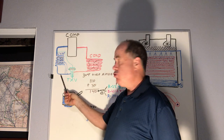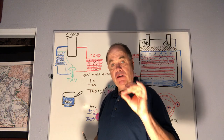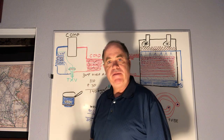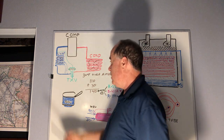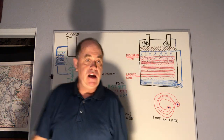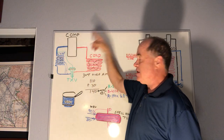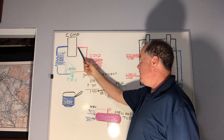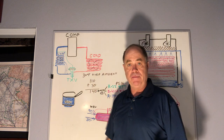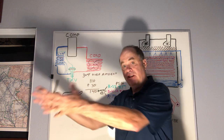As the refrigerant travels into the evaporator, it's a low-temperature, low-pressure liquid with a little bit of vapor. As it travels through the evaporator, it absorbs the heat from whatever we're trying to cool down — like your room or zone. Then the compressor sucks it from the suction line and sends it out the discharge line. That discharge gas is hot. As it travels down the discharge line, it desuperheats, and then it comes to our condenser where we dump the heat into a place we don't care about — generally outside for a window unit or central AC system.